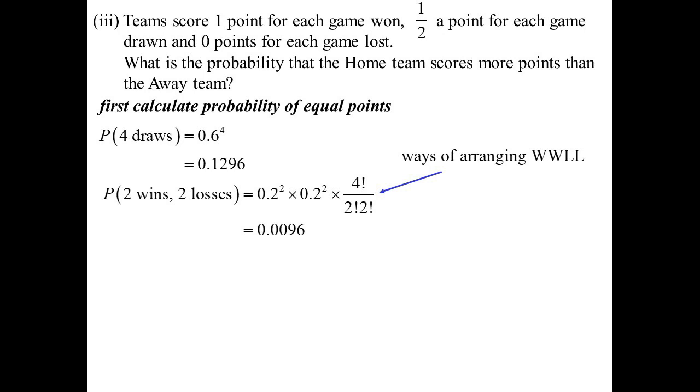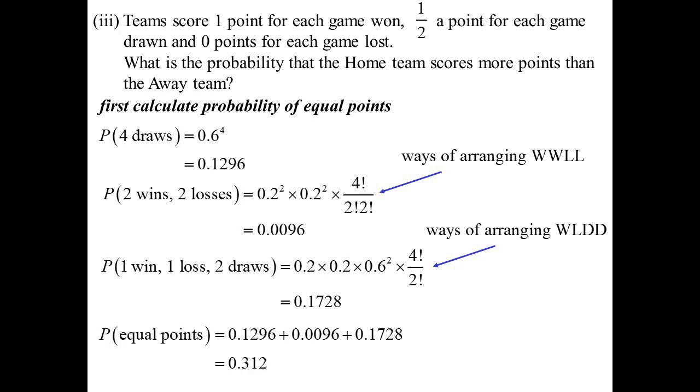What else could happen? We could have one win, one loss, and two draws. 0.2 times 0.2 times 0.6 squared, but then times the number of ways you could arrange WLDD. So four factorial on two factorial. I think that's it. So adding them all up, we get 0.312.